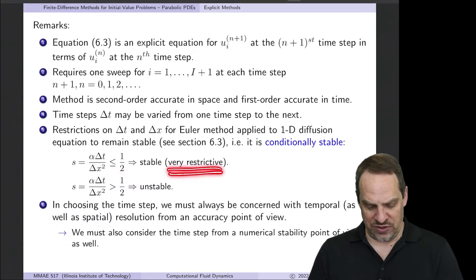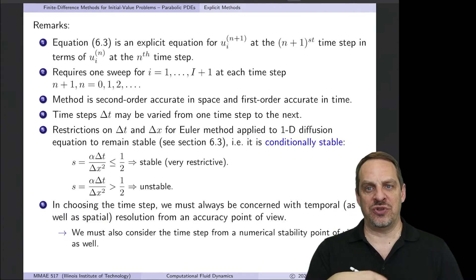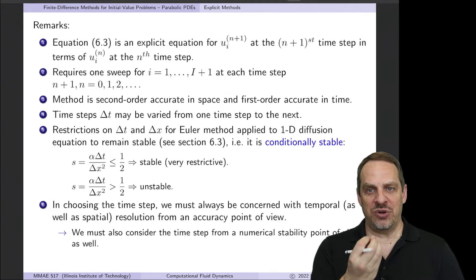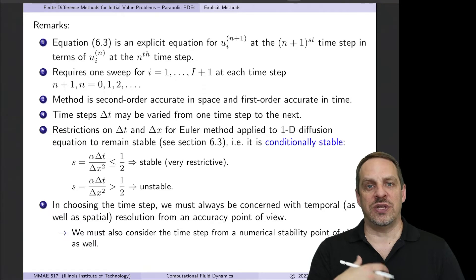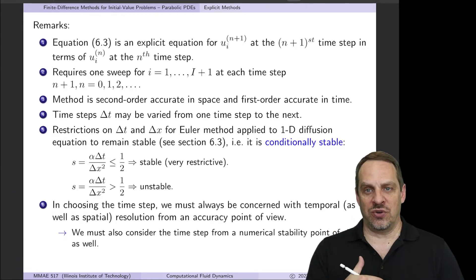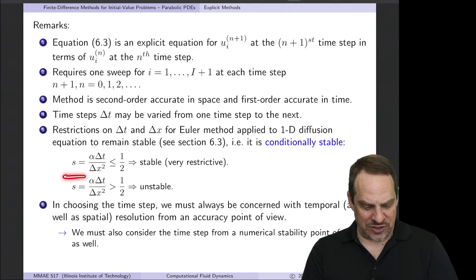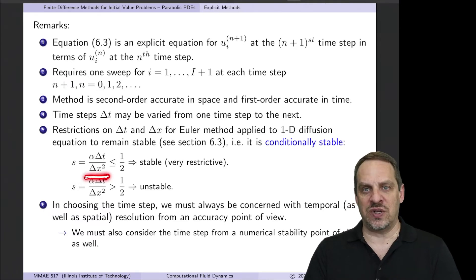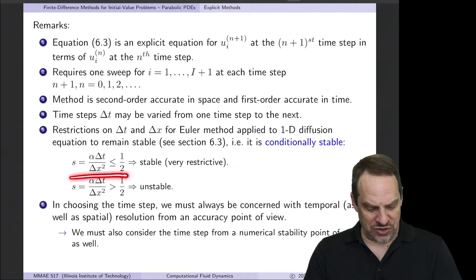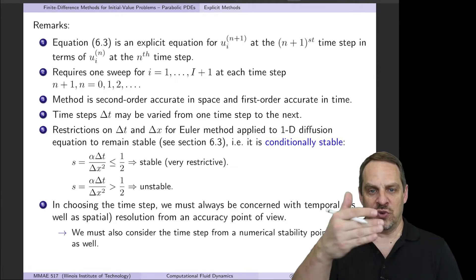What does it mean for a numerical method to be unstable? At each time step we introduce round-off errors — tiny perturbations in the solution. If those perturbations grow, the method is unstable; if they don't grow or decay, it is stable. For stability, s ≤ 1/2. In practice, once you choose your grid size Δx, this limitation determines the Δt needed to maintain a stable solution as you march forward in time.